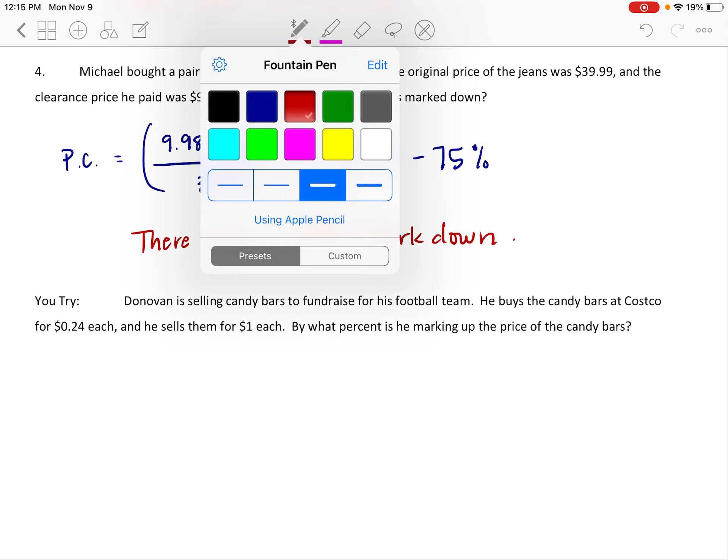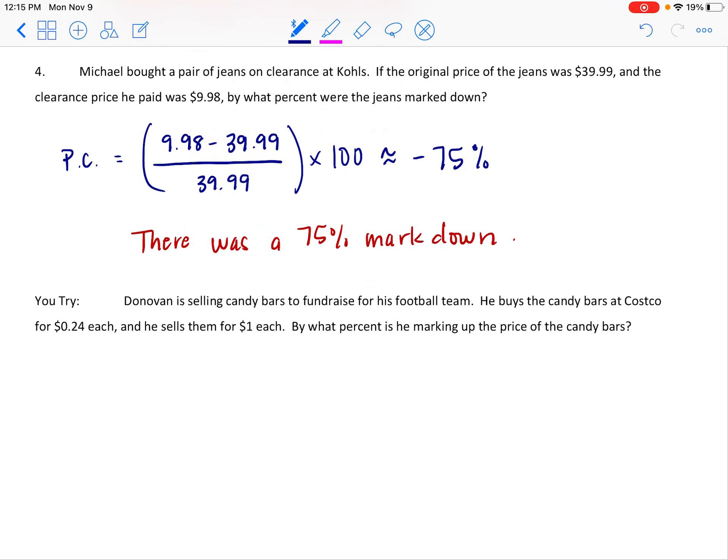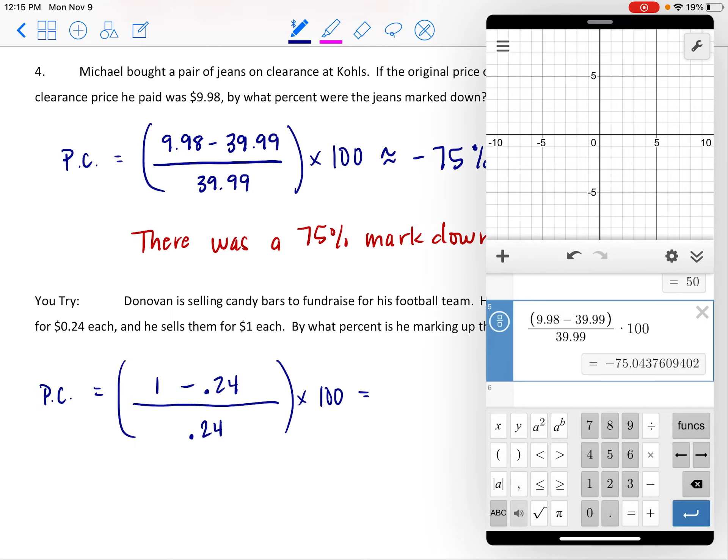One last one to try. It says Donovan is selling candy bars to fundraise for his football team. He buys the candy bars at Costco for 24 cents each, and he sells them for a dollar. By what percent is he marking up the price of those candy bars? Well, let's see. So the original cost for these candy bars is 24 cents, and he's selling them for a buck. So he's marking these things up. We're going from the 24 cents to a dollar, and we want the dollar to be first because we want this bigger number to go first. We want this to be a positive amount. And we're going to multiply that fraction by 100.